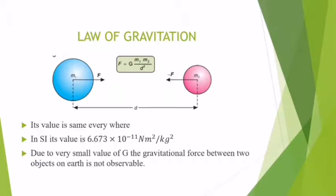Due to very small value of G, the gravitational force between two objects on earth is not observable. The objects around us, we do not observe any force between two objects around us due to this very small value of G. This is our law of gravitation.